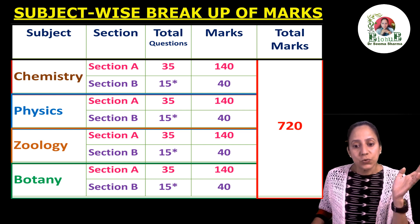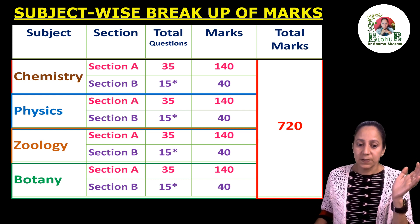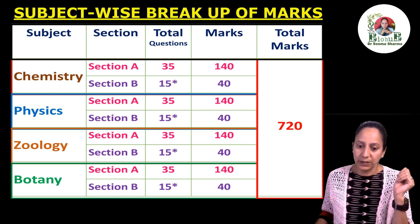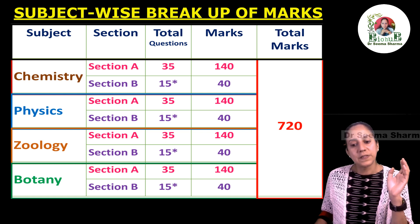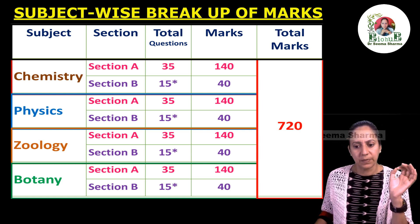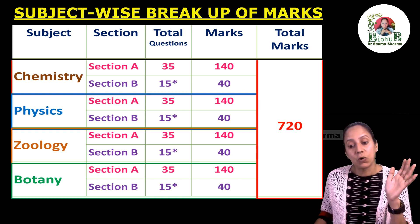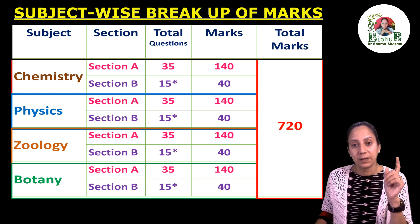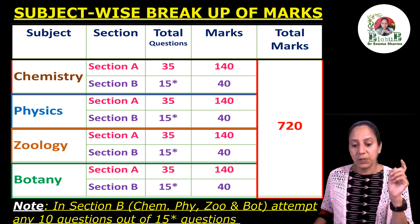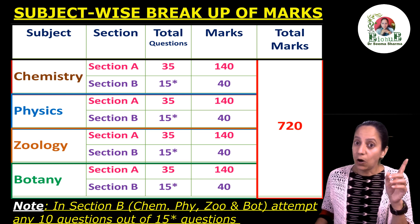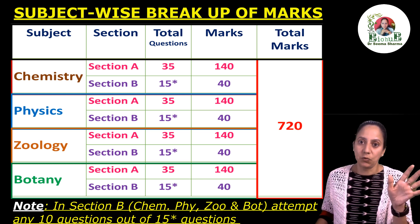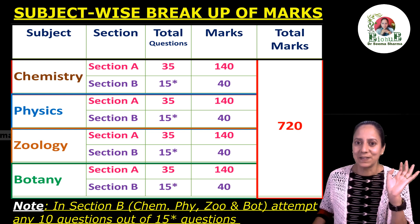Regarding the subject-wise breakup of these 200 questions, there are 4 subjects: Chemistry, Physics, Zoology, and Botany. There will be 2 sections in each subject — Section A and Section B. In Section A there are 35 compulsory questions, but if you don't know an answer, don't attempt it. In Section B there are 15 questions in total, out of which you have to attempt any 10. Utilize that choice wisely.